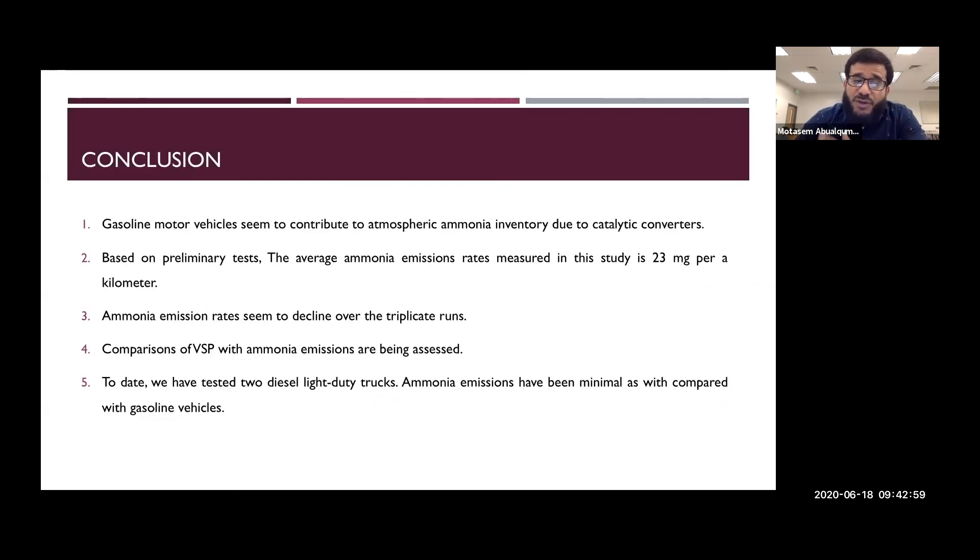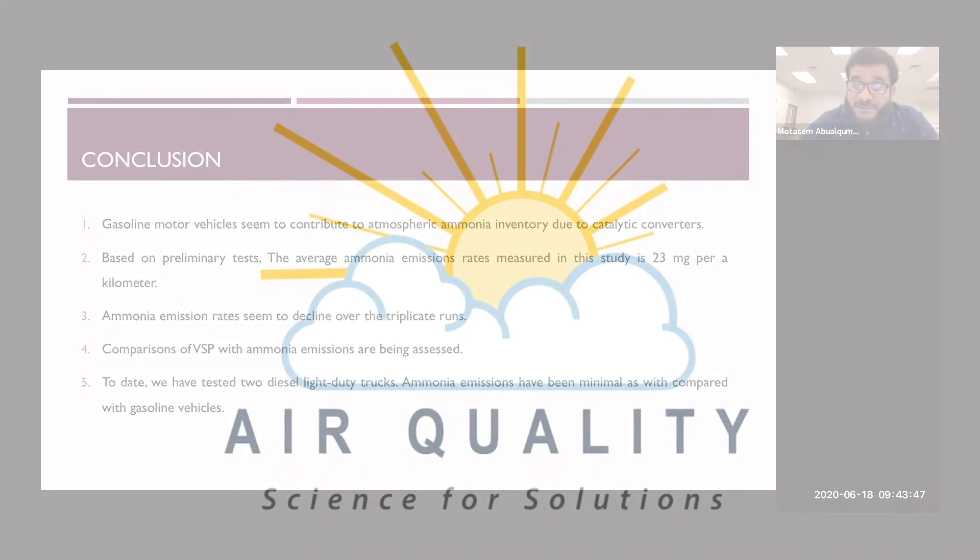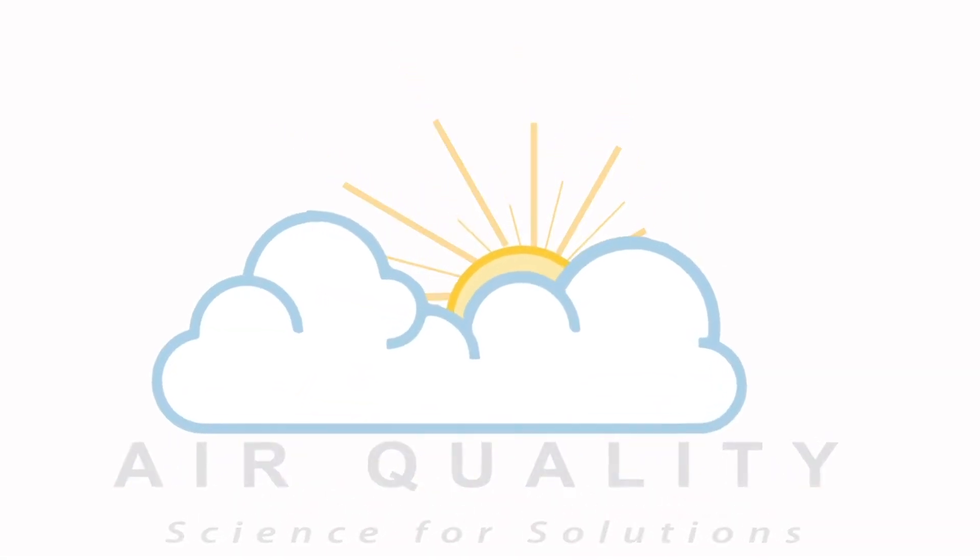My last slide here is the conclusion. We conclude that the gasoline motor vehicles seem to contribute to atmospheric ammonia inventory due to the catalytic converters. Based on our preliminary tests till now, the average ammonia emissions rates measured in this study is 23 milligram per kilometer. The third point is ammonia emission rates seem to decline over the triplicate runs. Number four, we still have to find any comparison of the vehicle specific power and other parameters with ammonia emissions. To date, we have tested two diesel light duty trucks and the ammonia emissions have been minimal as compared with the gasoline vehicles. I end my presentation, and if you have any questions, I'll be ready.